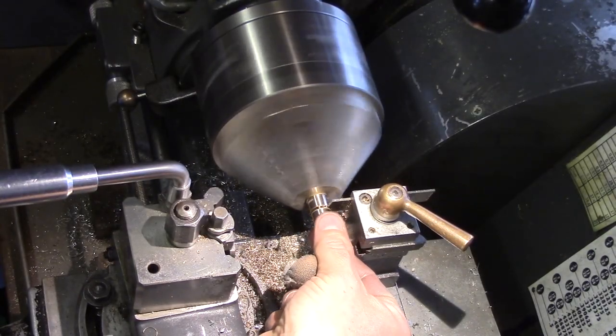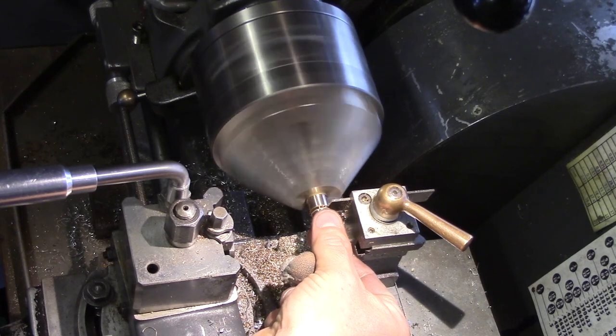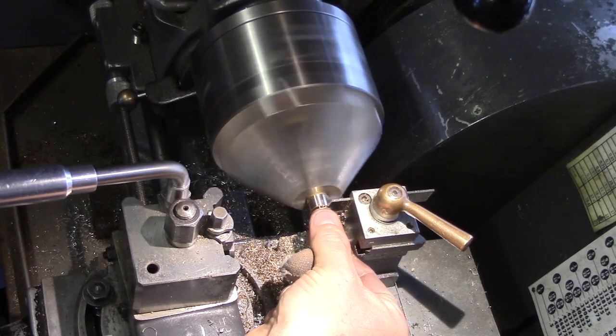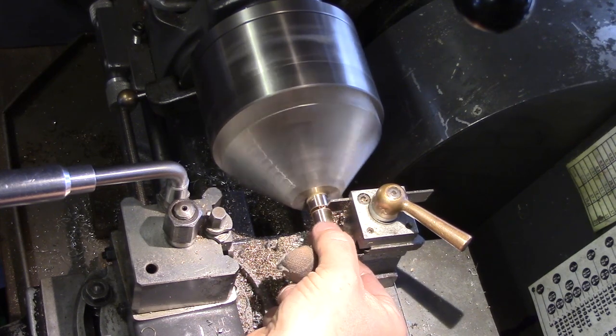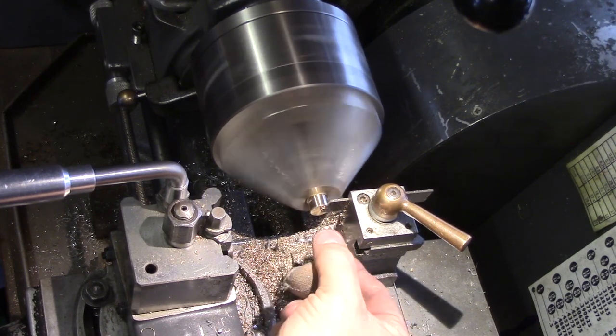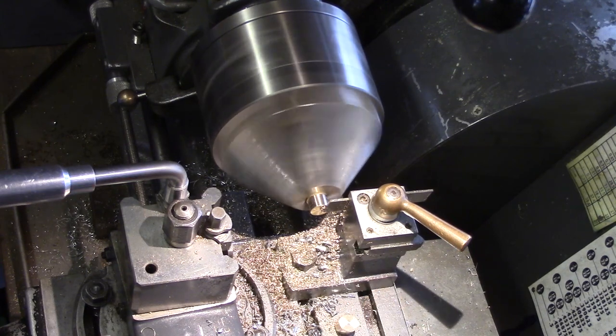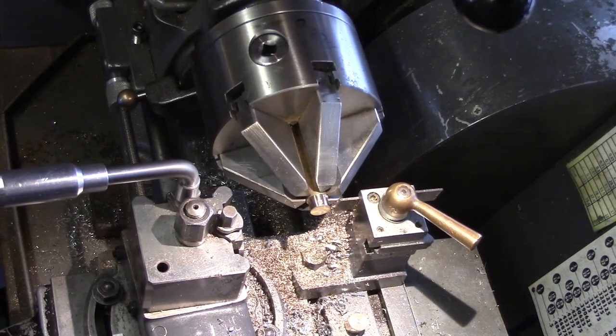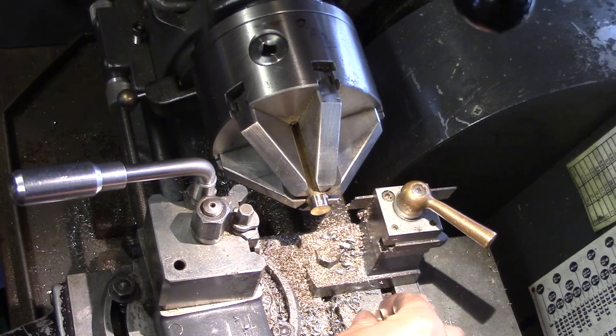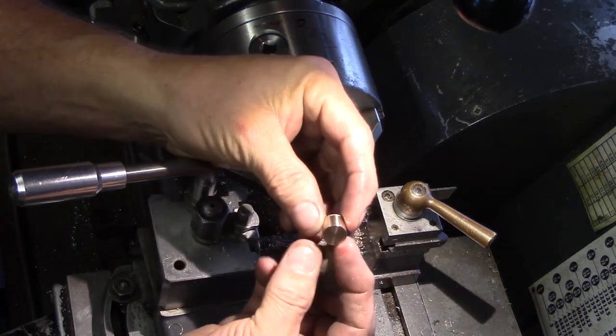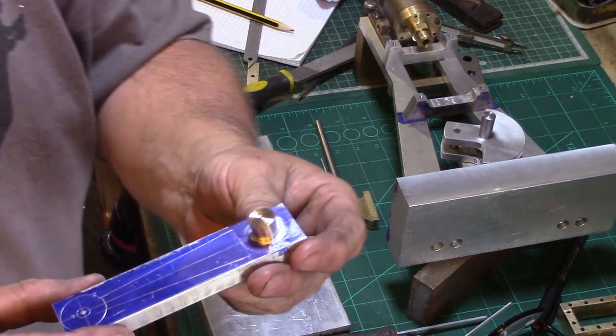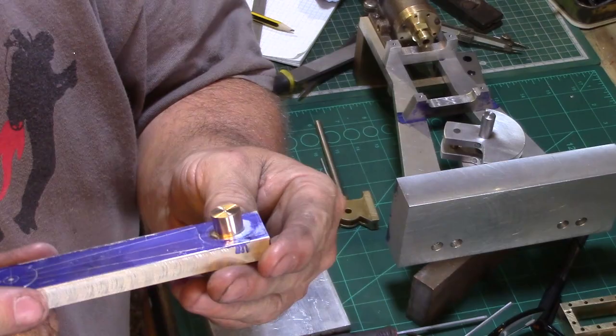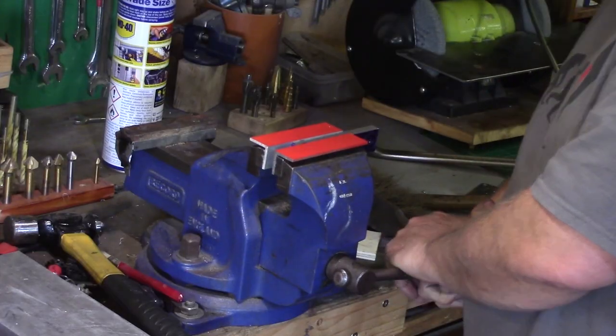This was then parted off using the rear tool post, and then the cut end was also cleaned up in the lathe and brought to final length. A tiny section was turned away so that it would sit squarely in the hole, and then the bearing insert was firmly squeezed into the bore using my vise.